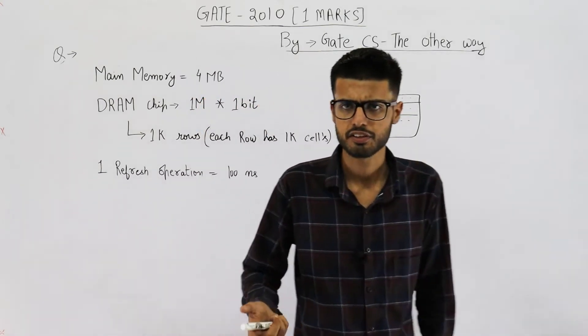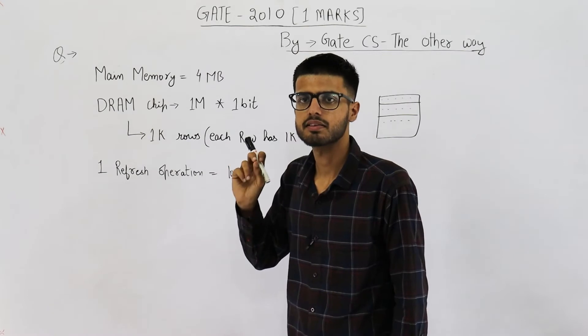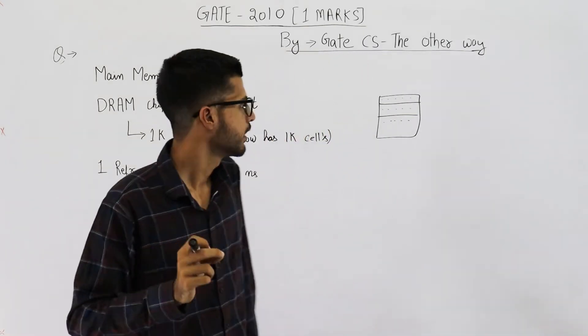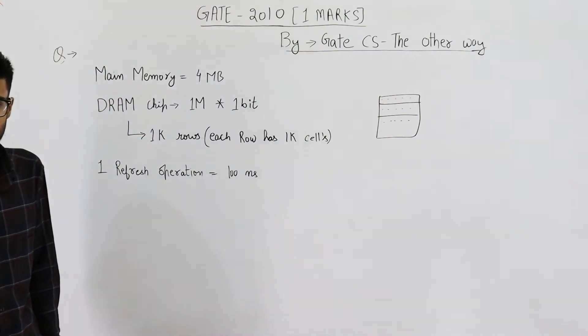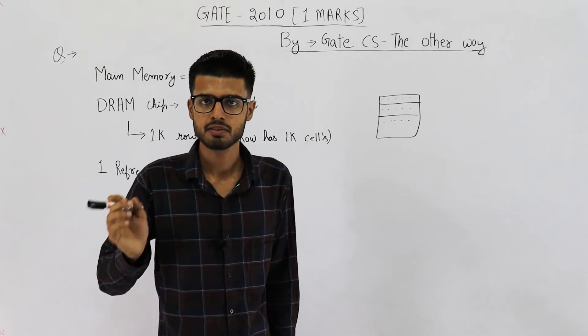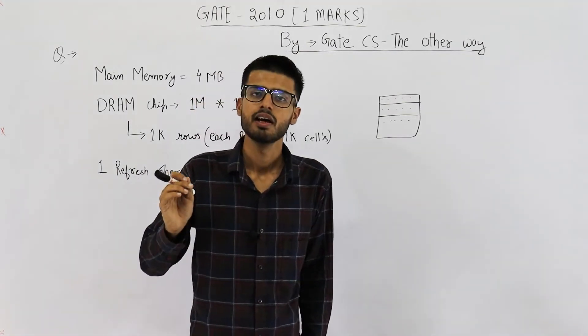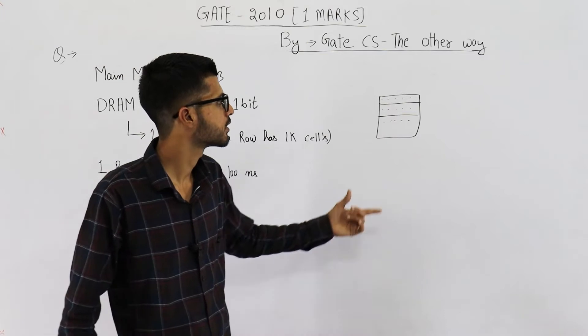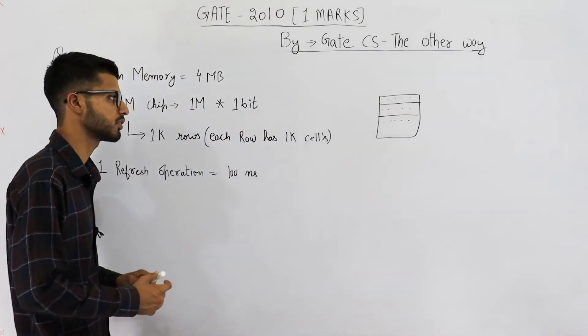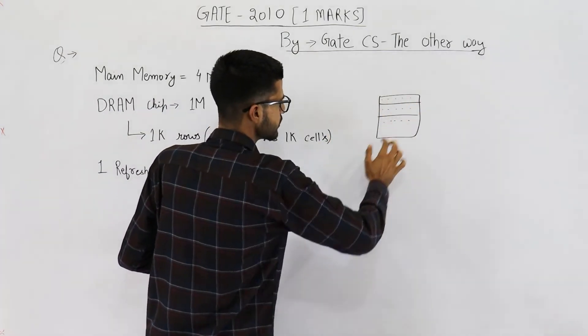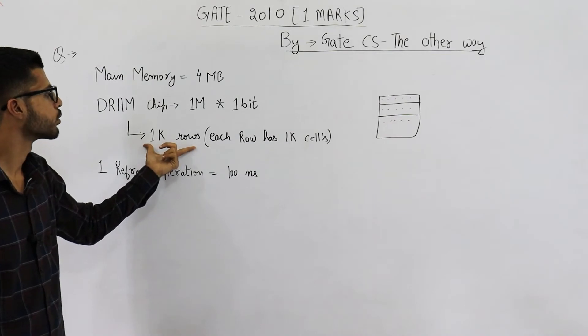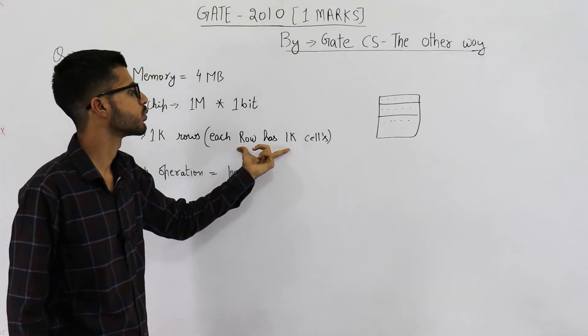Now, you might ask what is refreshing? DRAM chips, that is dynamic RAM chips, they are made out of capacitors. And capacitors lose charge over time. Say, you have charged some capacitor. After certain amount of time, it will lose the entire charge. Hence, the entire information saved in the DRAM chip will be lost if it is not refreshed. So, for purpose of refreshing, we place these locations into rows. They are saying, we have 1K rows and each row has 1K cells.